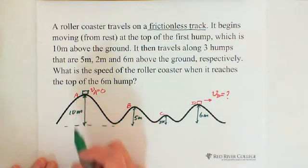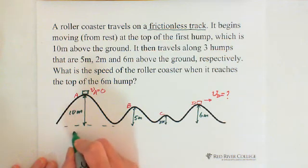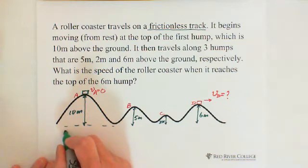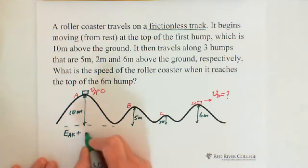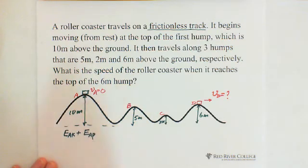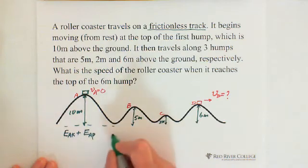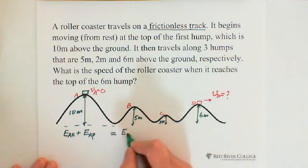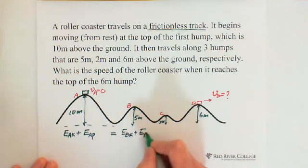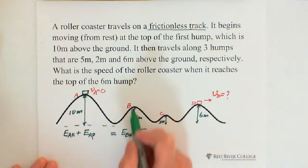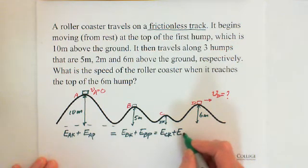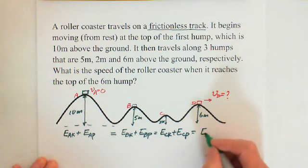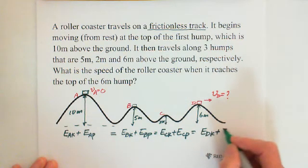So that's why this is following the condition of conservation of mechanical energy. So we can write at this moment, the total mechanical energy we can write: E at point A kinetic energy plus E at point A potential energy. And equals to at this point E_BK plus E_BP. This is the kinetic energy at this moment and the potential energy at this moment. And equals to E_CK plus E_CP, and equals to E_DK plus E_DP.